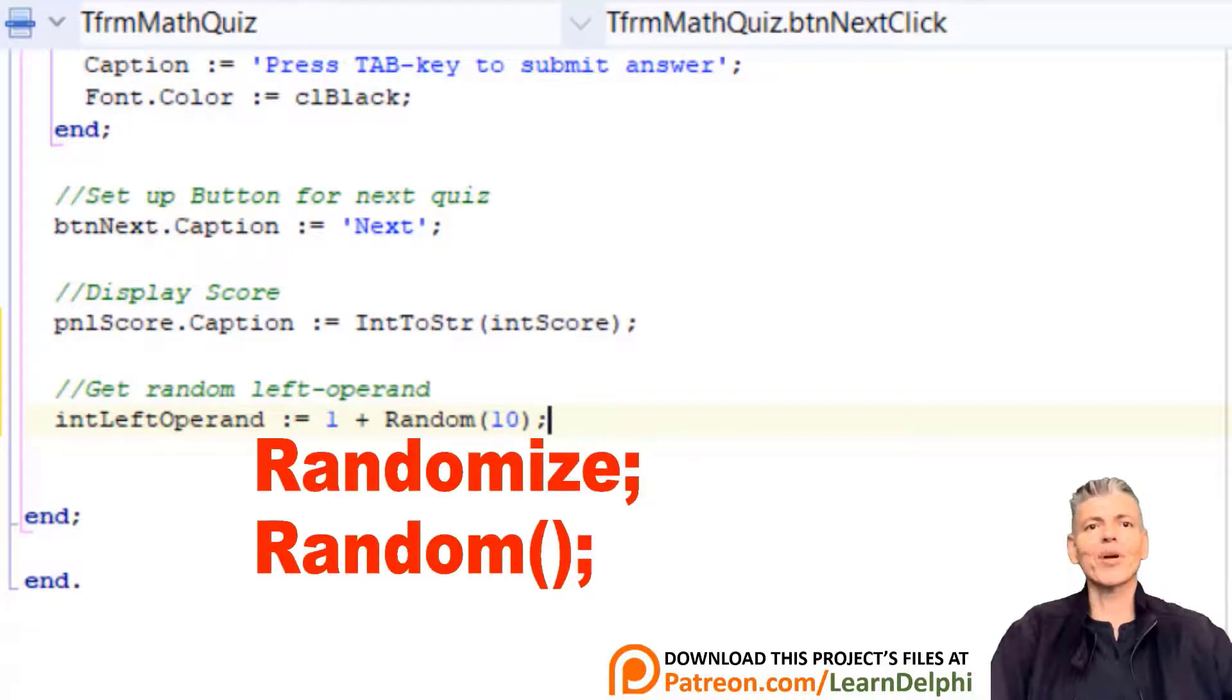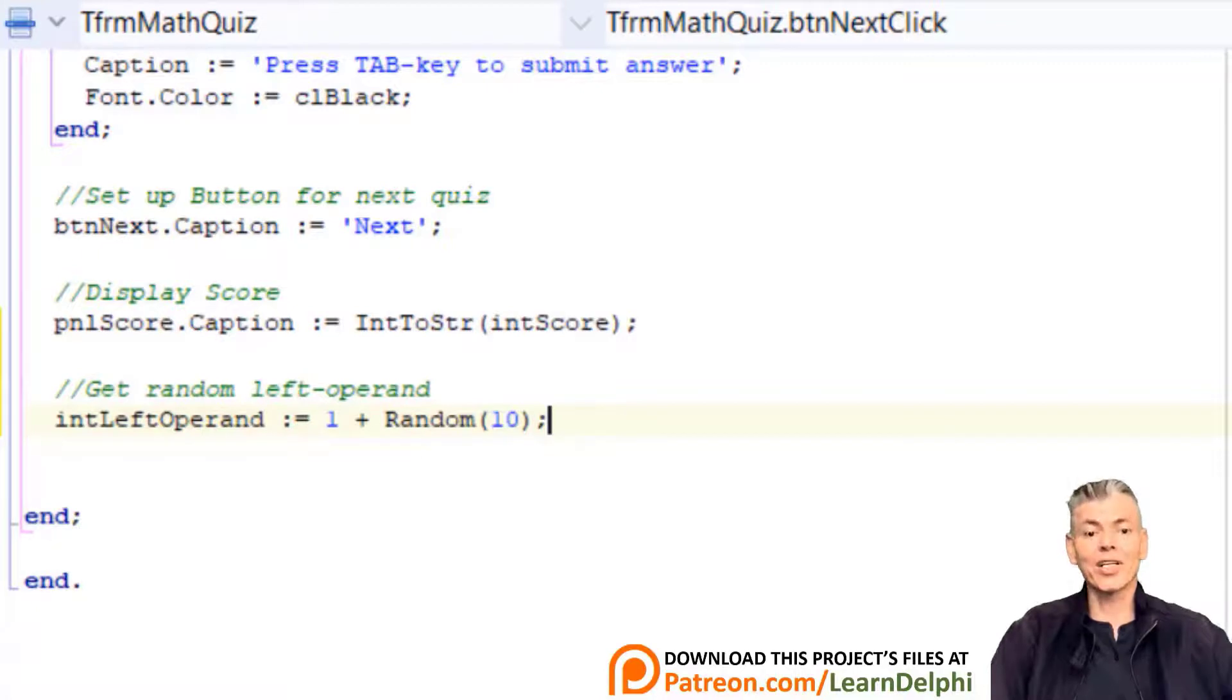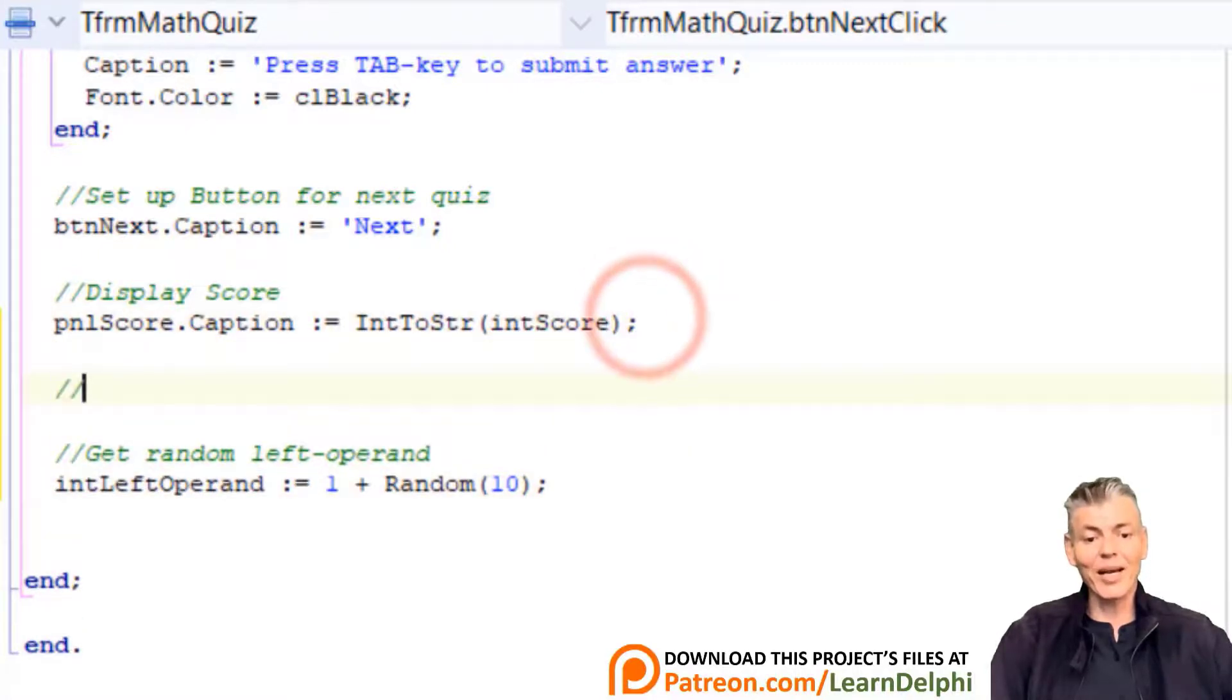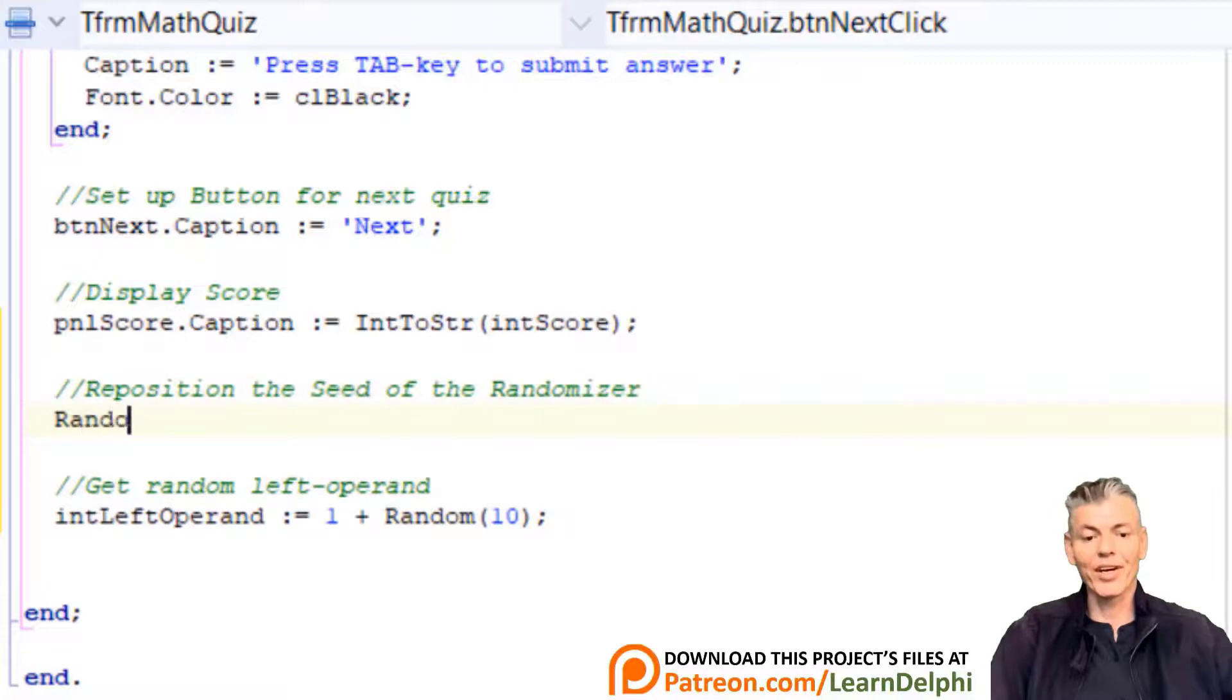To avoid this problem, Delphi also provides the randomize procedure that we can use in conjunction with the random function. The randomize procedure uses the time of the day as the starting point. The time of the day changes every millisecond, so the seed will be unique and your numbers will therefore be more random. So let's go back to our code and add the randomize procedure.